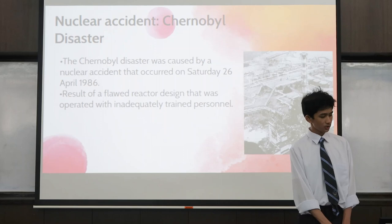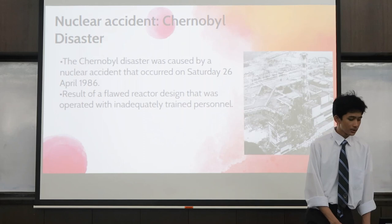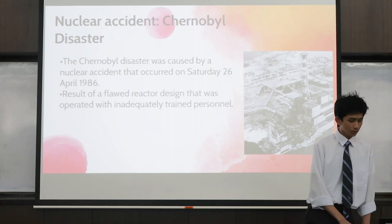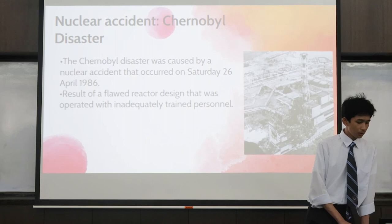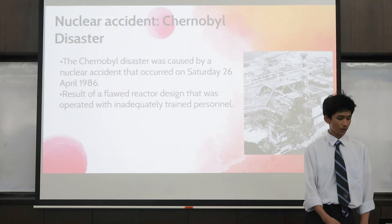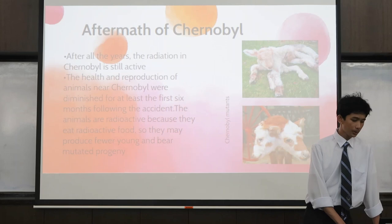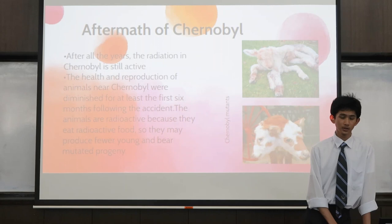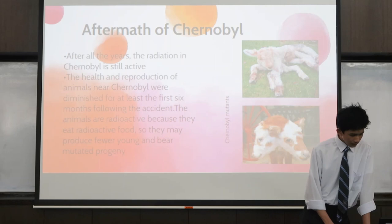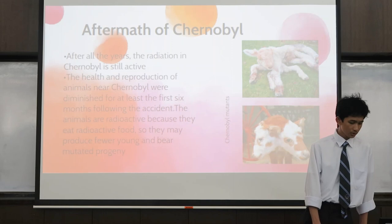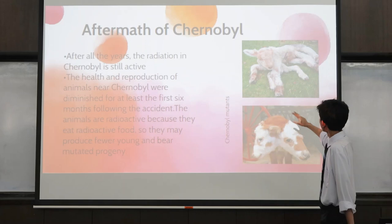Next is a nuclear accident — the Chernobyl disaster. The Chernobyl disaster was caused by a nuclear accident that occurred on Saturday, 26 April 1986. Chernobyl actually powered its electricity by nuclear energy, and the result of a flawed reactor design operated with inadequately trained personnel caused this explosion. After all these years, the radiation in Chernobyl is still active. The health and reproduction of animals in Chernobyl would diminish for at least the first six months following the accident. The animals are radioactive because they eat radioactive food, so they may produce fewer young and very mutated offspring. These are the Chernobyl mutants — as you can see, they grew two heads and six legs.